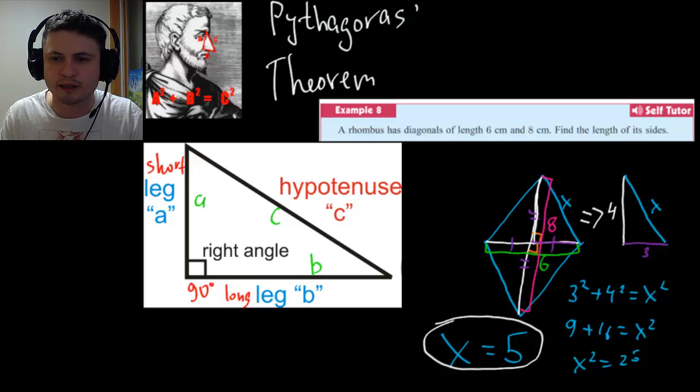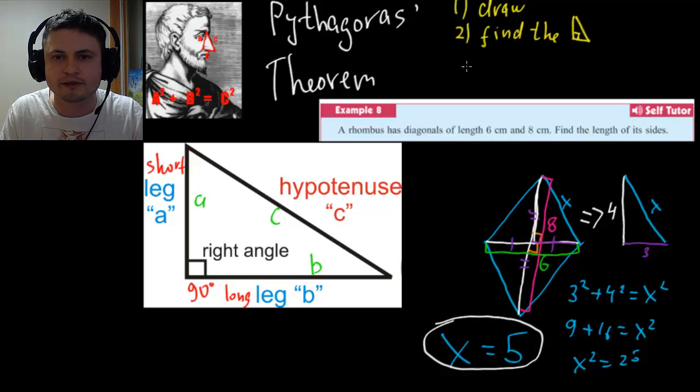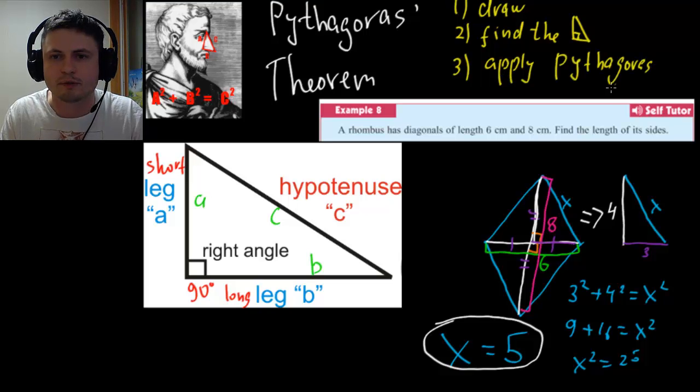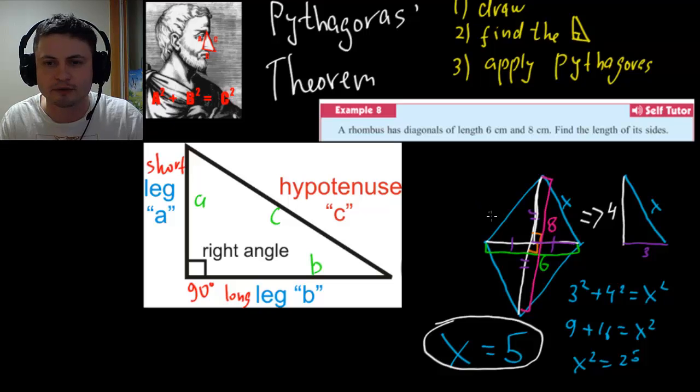So basically step number one here was to draw the figure. Step number two was find the right triangles. And step number three, apply the Pythagorean theorem to solve and find the missing sides. That's basically how you do these types of problems. You just need to remember the properties of various geometric figures. And this is something we'll be discussing more in detail in the next chapter as well.